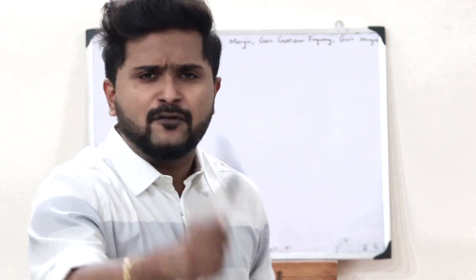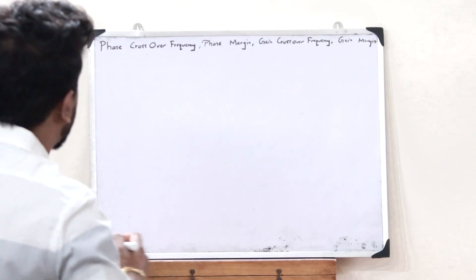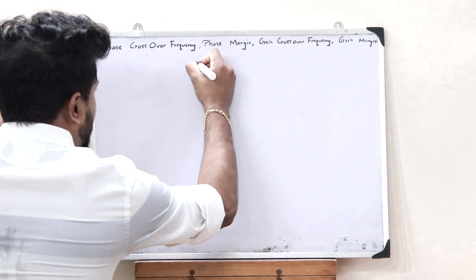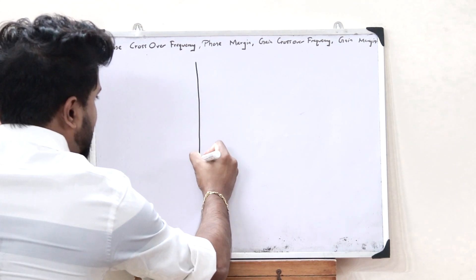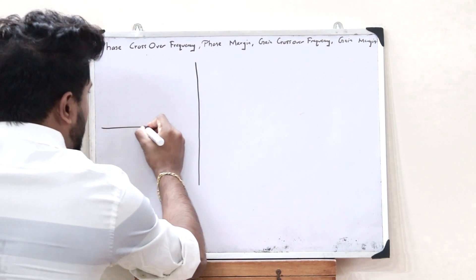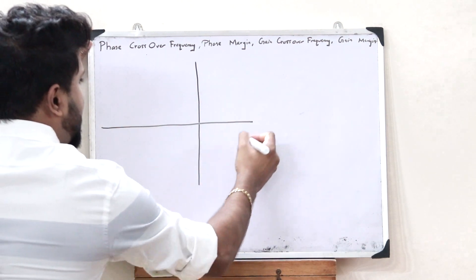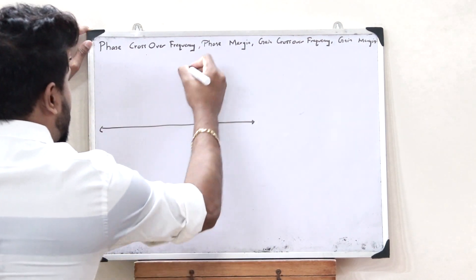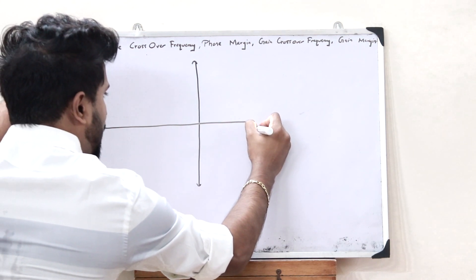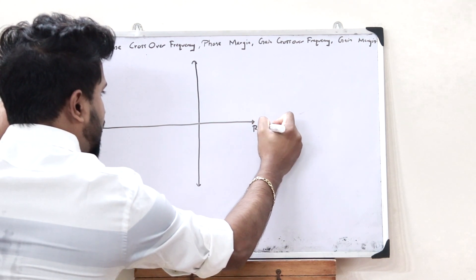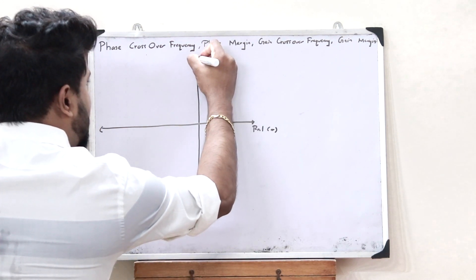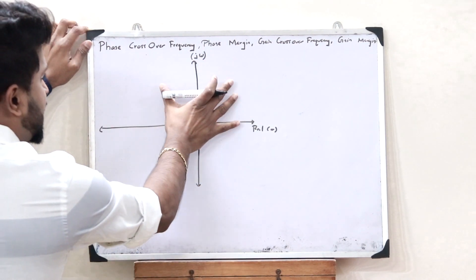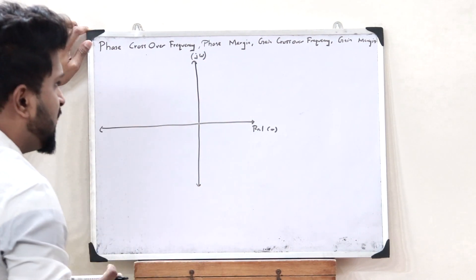In order to find these terms, let us first plot a particular polar plot. For that, let us consider the S-plane. In the case of an S-plane, we know that this is the real part, or sigma, and this is the imaginary part, j omega. So this is the S-plane.